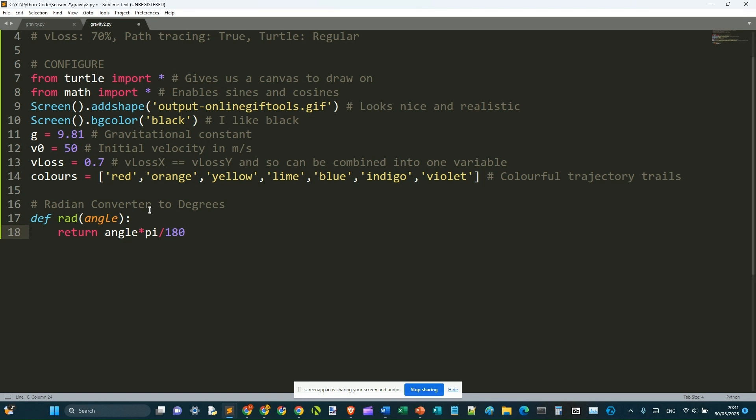This converter is necessary because the math trig functions take values in radians, but in this experiment, we take values in degrees. If you don't understand, remember, 180 degrees is pi radians.